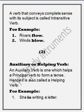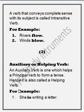Third form: auxiliary or helping verb. A helping verb is one which helps a principal verb to form a tense — एक ऐसा verb जो एक principal verb के तौर पर एक tense की शकल में help करता है। Hence it is also called a helping verb. For example: 'She is writing a letter' — here 'is' is the helping verb in tense form. 'She will sing a song' — 'will' is the helping verb.